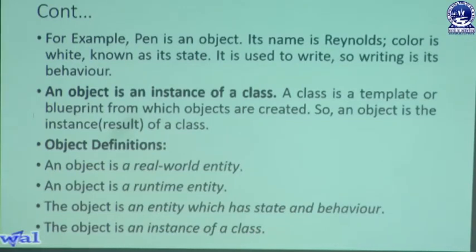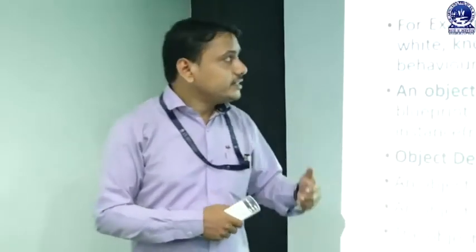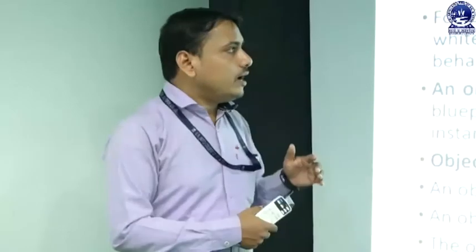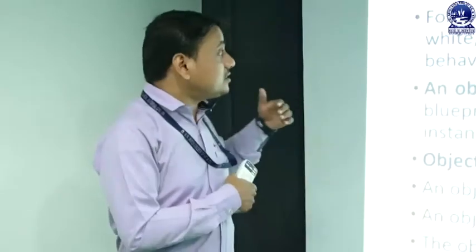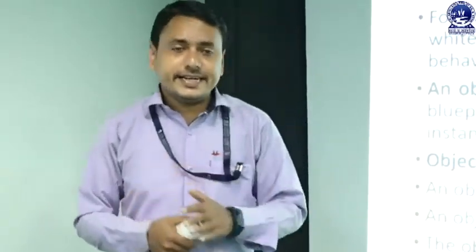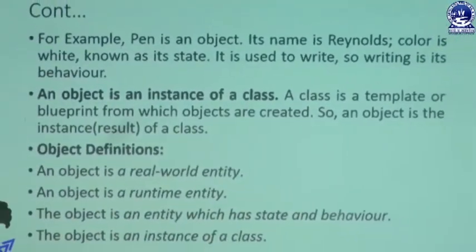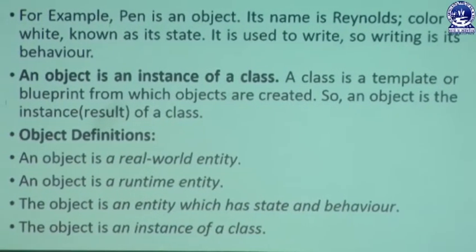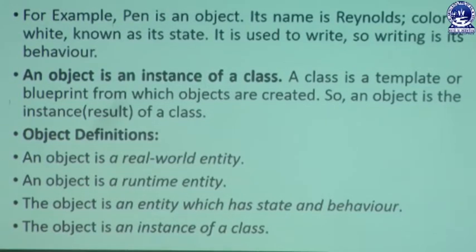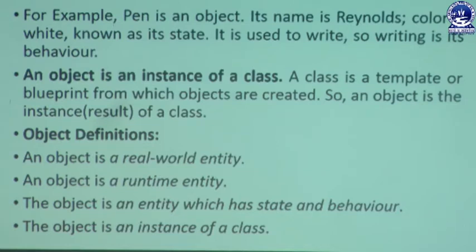We can differentiate with another example like a car. A car is an object. The car's name is BMW, and its color is white — that is the state of the car object. The car is used for driving from one position to another — that driving is related to the behavior of the car object. An object is an instance of a class; without a class we can never create an object. A class exists, which is why we can easily create an object.